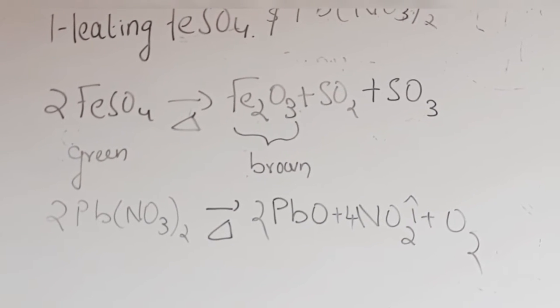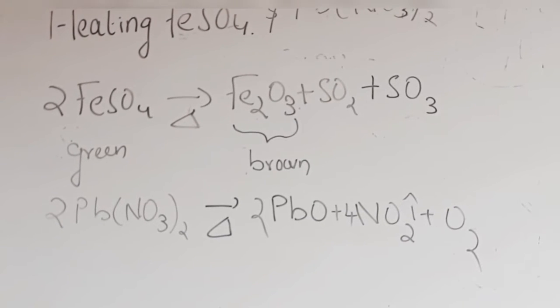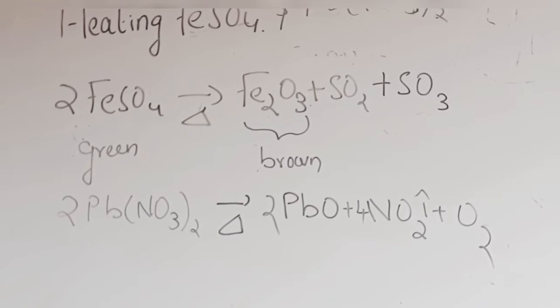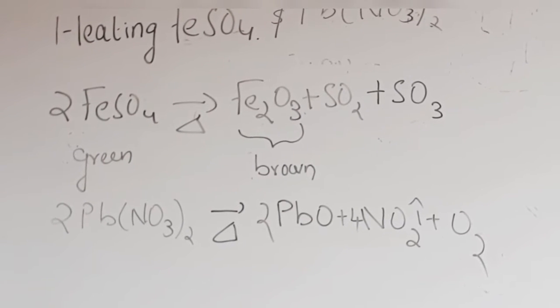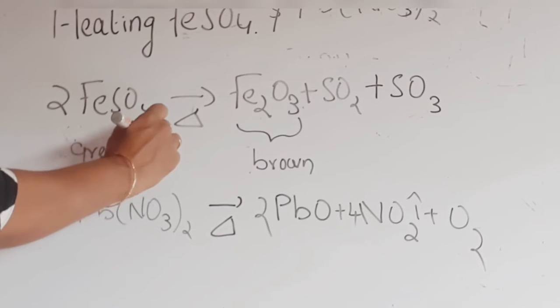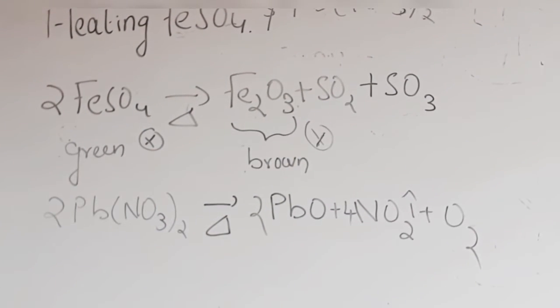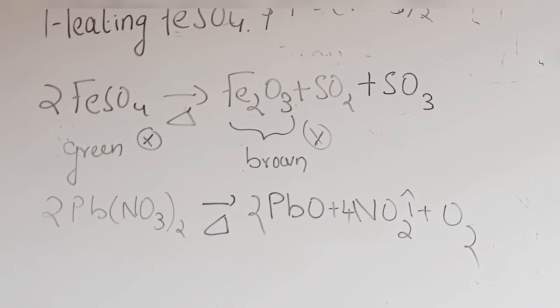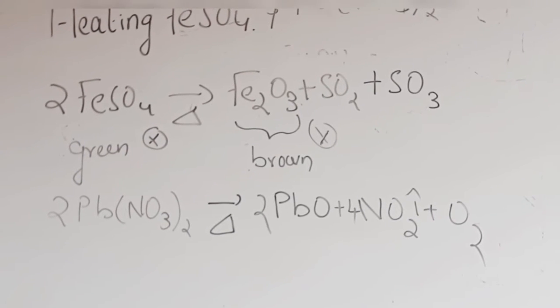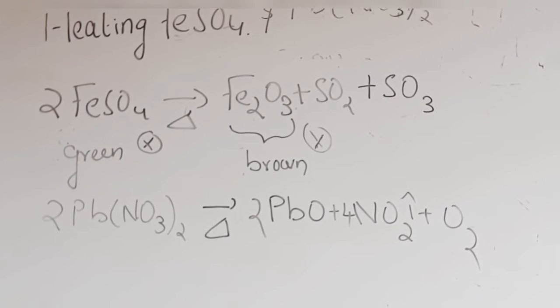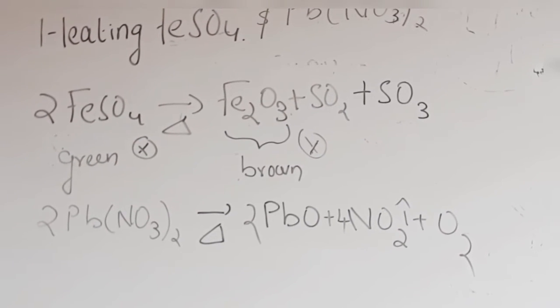Here, let us see the questions that could be asked for board exams. A green color crystal X when heated changes to brown color compound Y, along with the smell of burning sulfur. Identify X and Y and write the chemical equation. This could be asked for a 3 mark question or a 2 mark question.